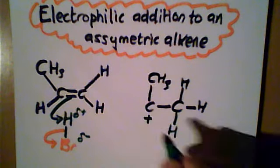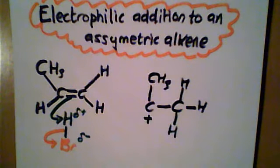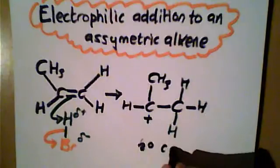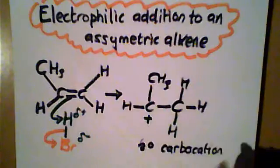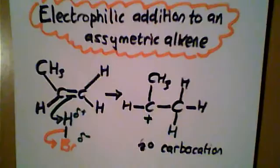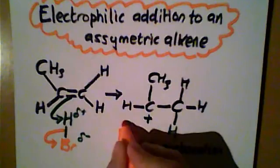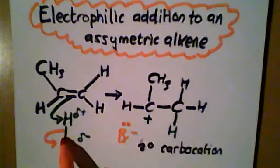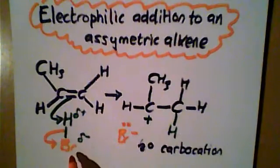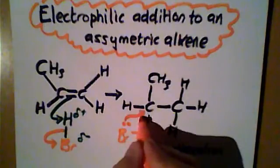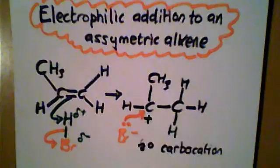Then this carbon number two is left with the positive charge and this is called a secondary carbocation. And there's only one thing left for the bromide ion to do—remember it's got a negative charge—to take one more electron with it that belongs to this bond here. Therefore the lone pair will attack this carbon here, nucleophilic attack, and therefore we'll end up with a molecule of 2-bromopropane.